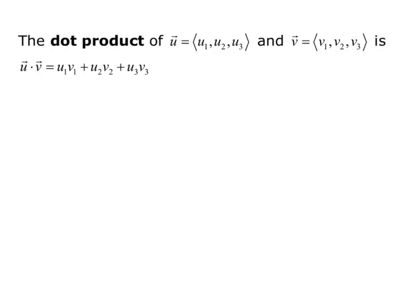So essentially what I'm doing is I'm multiplying the two x components of the vectors together, multiplying the two y components of the vectors together, and multiplying the two z components of the vectors together, and then adding the results. So note that the dot product result is a scalar. You do not get a vector as your answer. You just get a number.